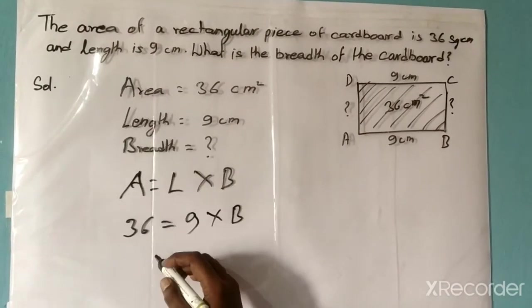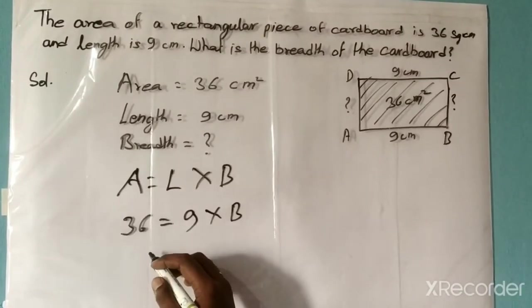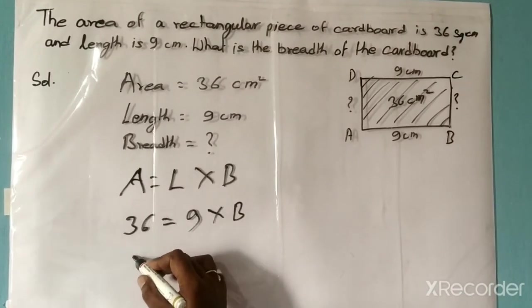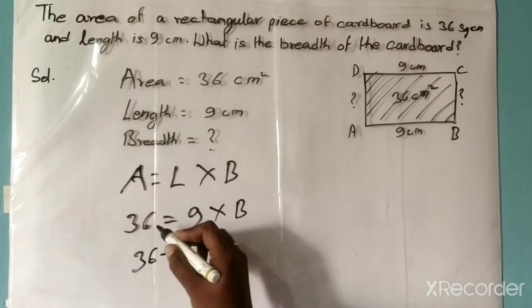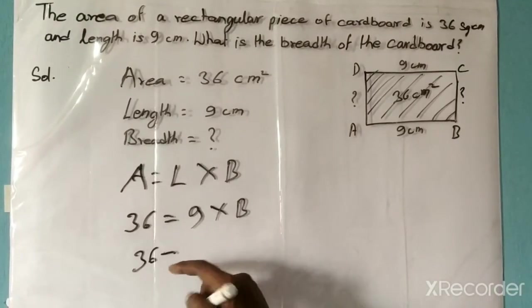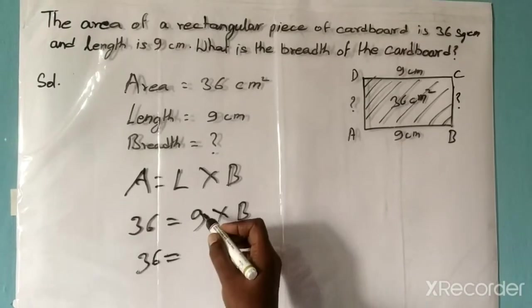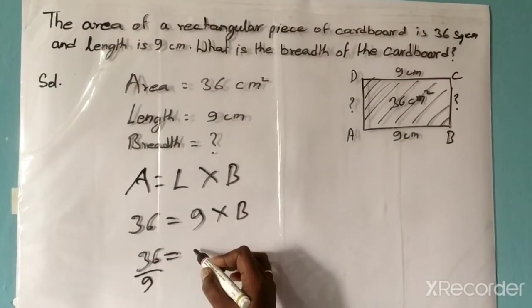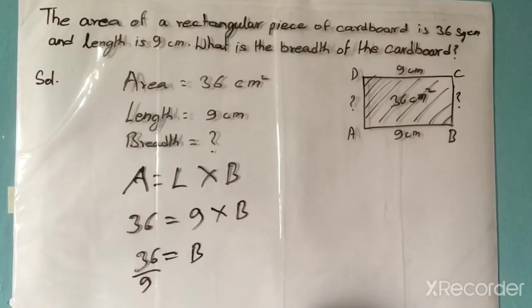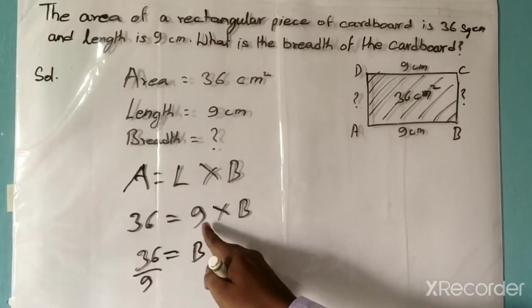So we'll solve this equation now. 36 equals 9 times B. This 9 will go to the other side, so it will be divided.